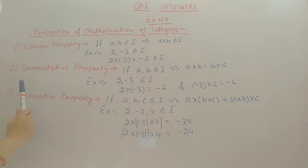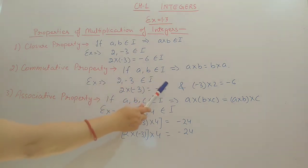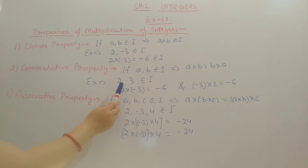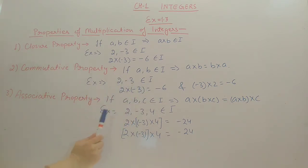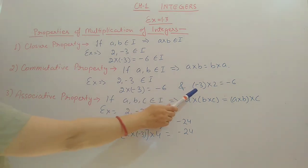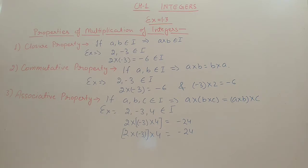The second property is the commutative property. According to this property, if we have two integers, the multiplication order does not matter — if you multiply A by B or B by A, in both ways the answer will be the same. For example, 2 into minus 3 gives minus 6, and minus 3 into 2 also gives minus 6. So in multiplication, order does not matter.